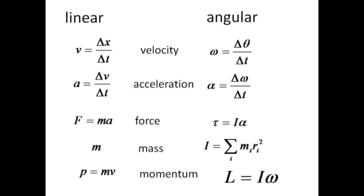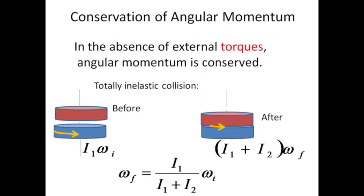Since linear momentum is the product of mass times velocity, it makes sense to define angular momentum, L, as the product of moment of inertia times angular velocity. Thus, L equals I omega. Angular momentum is of interest because, in the absence of external torques, it is conserved.